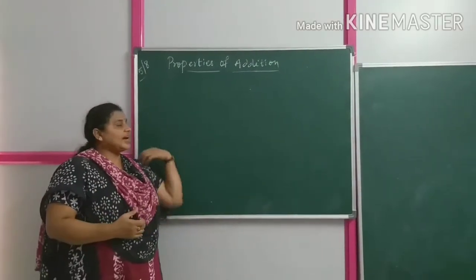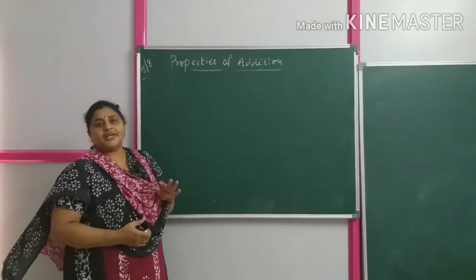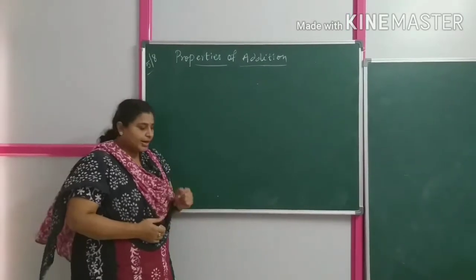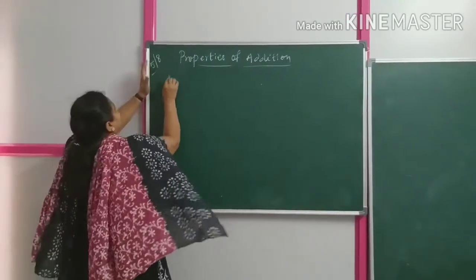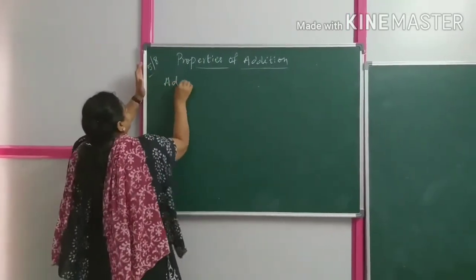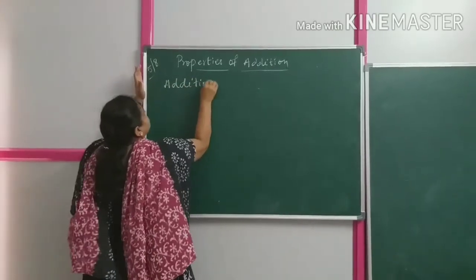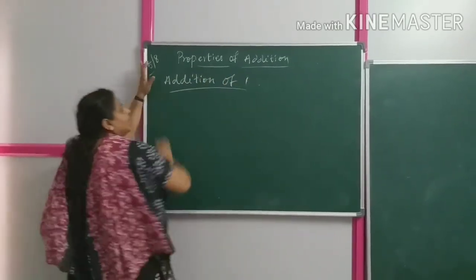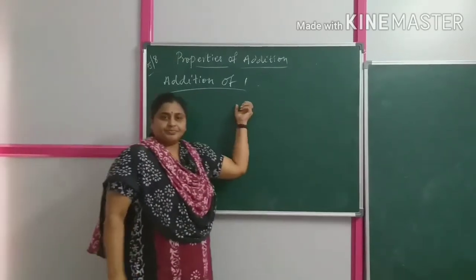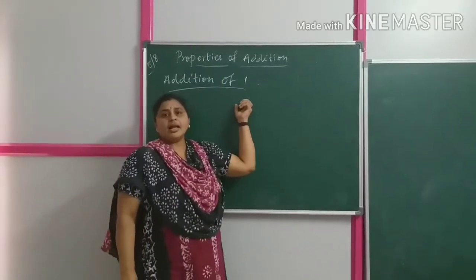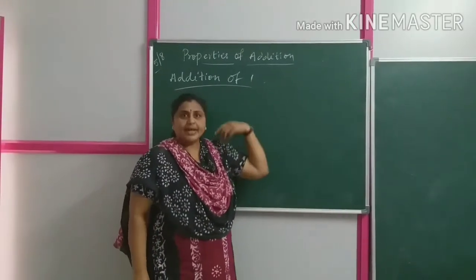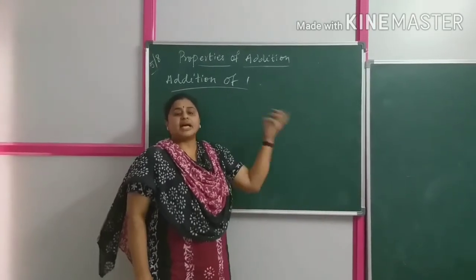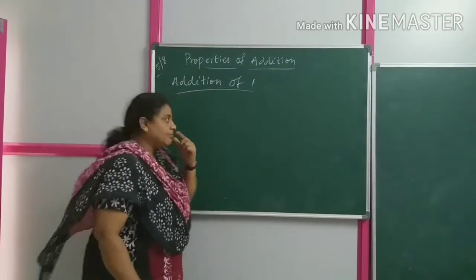Now, properties of additions. We have four properties that we are going to learn. The first property is addition of one. On adding one to any number, you get the successor of that particular number.